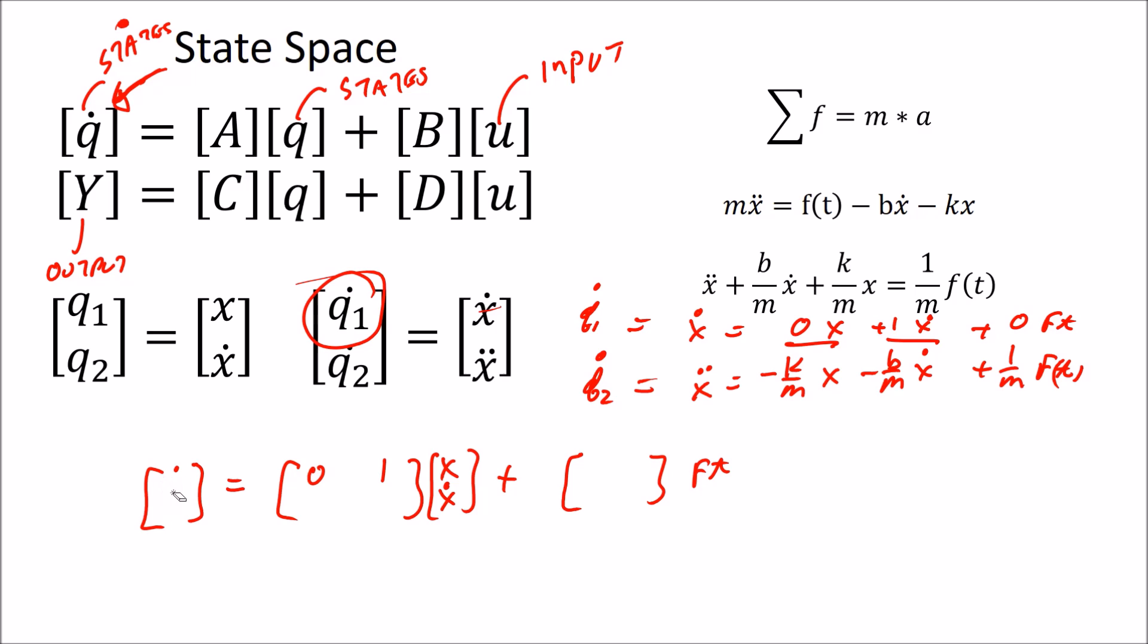My x double dot, let me write that a little better. My x double dot is minus k over m x, minus b over m x dot, and 1 over m, oops, I forgot the 0 up there in the first line. The 0 for my x dot, it's 0 times f(t), and x double dot is 1 over m times f(t). So that is my A matrix, my B matrix, that's the first line there. Okay, I hope that follows.